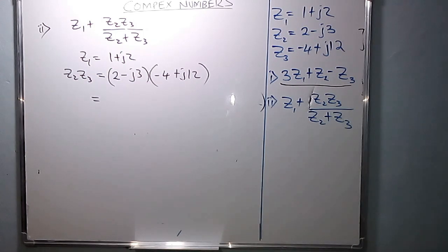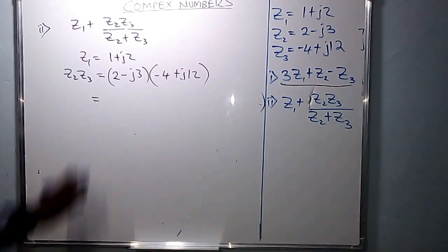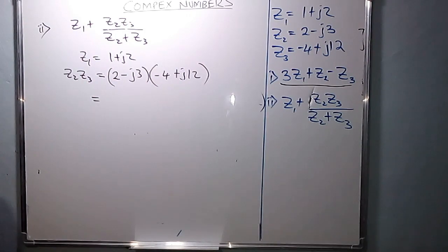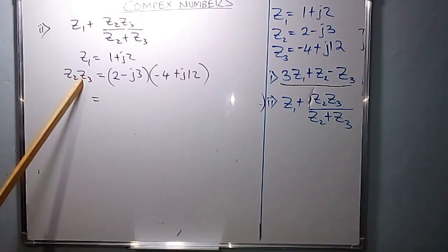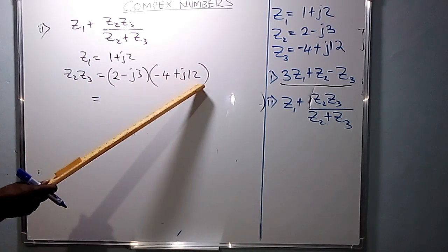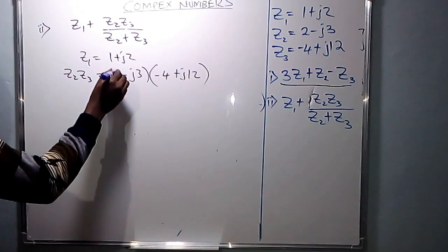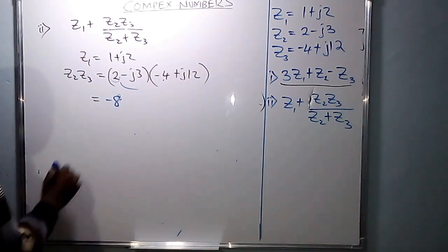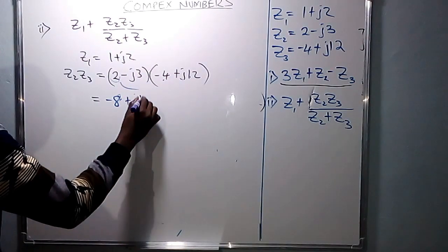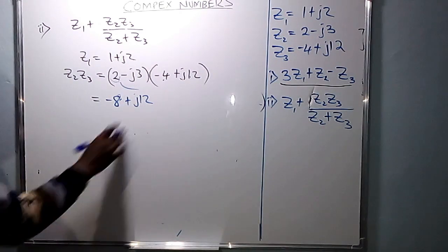We multiply (2 minus j3) times (negative 4 plus j12). The first term in the first bracket is 2, which multiplies everything in the other bracket: 2 times negative 4 gives negative 8, and 2 times j12 gives positive j24. So from the first term we have negative 8 plus j24.